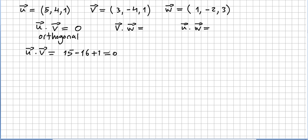What about v and w? Well, v and w, 3 times 1 is 3 plus 8 plus 3, that's 14. So v and w are not orthogonal.